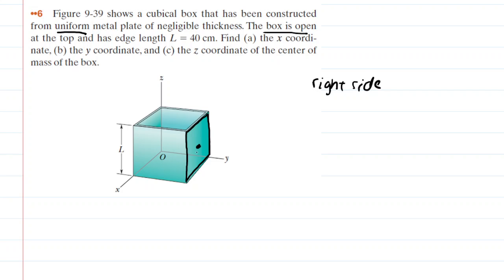That point represents the center of mass for the right-hand side. We know that the length of the box is 40 centimeters. Starting at the origin, we travel halfway across the X-axis — that's 20 centimeters — all the way across the Y-axis — that's 40 centimeters — and then halfway up the Z-axis, which is another 20 centimeters. So the coordinates are 20, 40, 20.